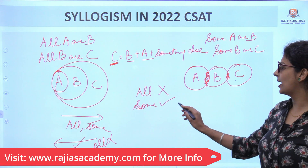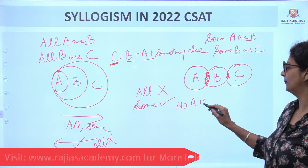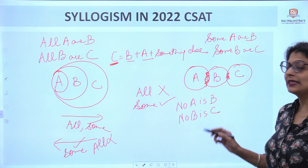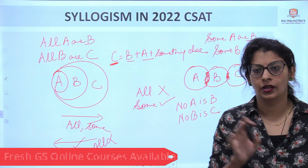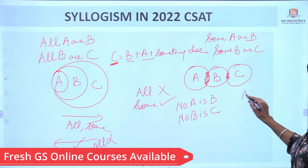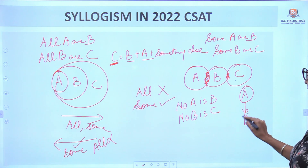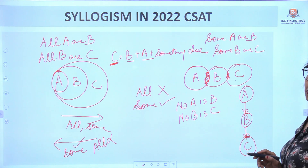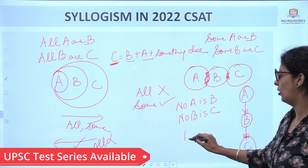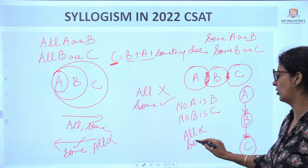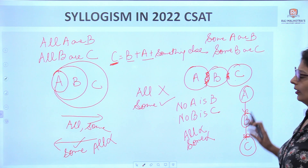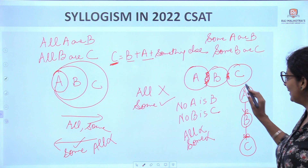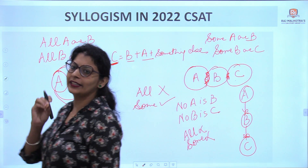Next statement type is 'No.' For example: No A is B, No B is C. 'No' means cross — completely separate circles in the diagram. In these types of questions, all conclusions with 'all' are automatically crossed out, and 'some' is also automatically false, because we cannot see them. What we can see in the diagram is only 'no,' so only 'no' type conclusions will be true.